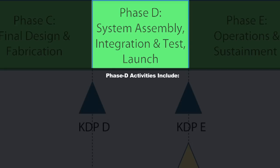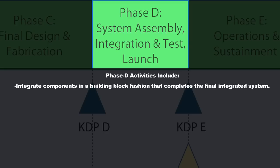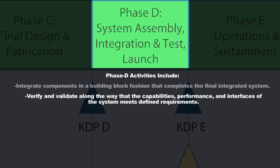Detailed activities in Phase D include integrating components in a building-block fashion into larger and larger subsystems, up to the full system level, until you've got the final integrated system. You're going to verify and validate along the way that the capabilities, performance, and all the interface requirements defined early in the process can all be met by the system as it's developing.